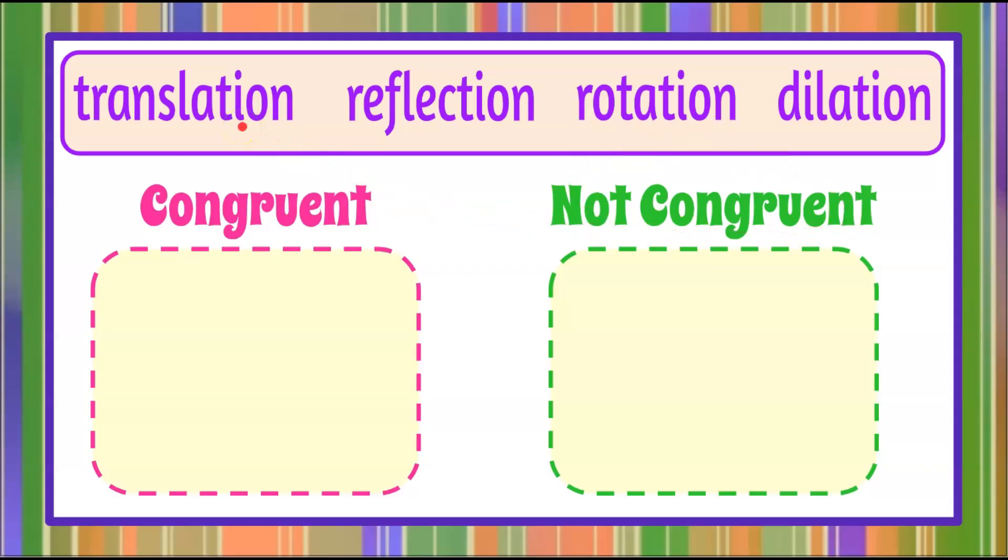So let's talk about translation first. A translation is really think of it as a shift or slide in the coordinate plane. So you could be going left, right, up, or down, or a combination of all those. So the image does not change size or shape when this happens. It just is shifted or slid to a new location. So therefore, to be a translation, the image must be congruent to the original figure.